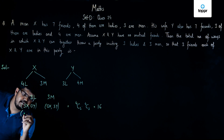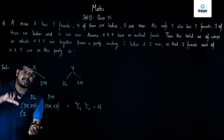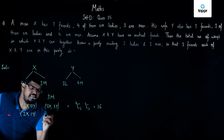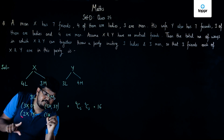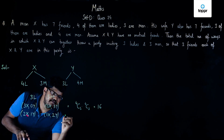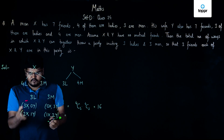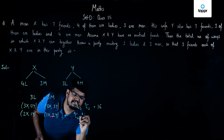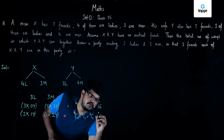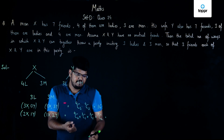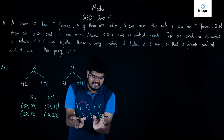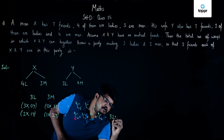For the next case, we select two lady friends of X and one lady friend of Y, and one male friend of X and two male friends of Y. This can be done in 4C2 × 3C1 × 3C1 × 4C2 ways, which simplifies to 6 × 3 × 3 × 6 = 18 × 18 = 324 ways.